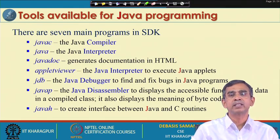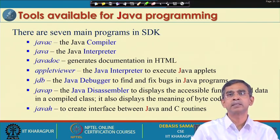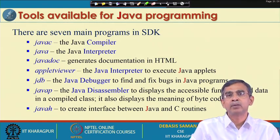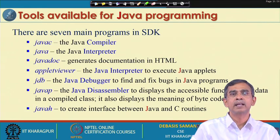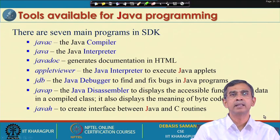JavaH is another facility included in JDK. It basically helps us create an interface between Java and other programming languages, particularly C routines or C++ routines. Suppose some part of the program you want to develop in C and another part in Java, and both things need to be interfaced together so they can work together. In that case you can use JavaH - a facility bundled in JDK.